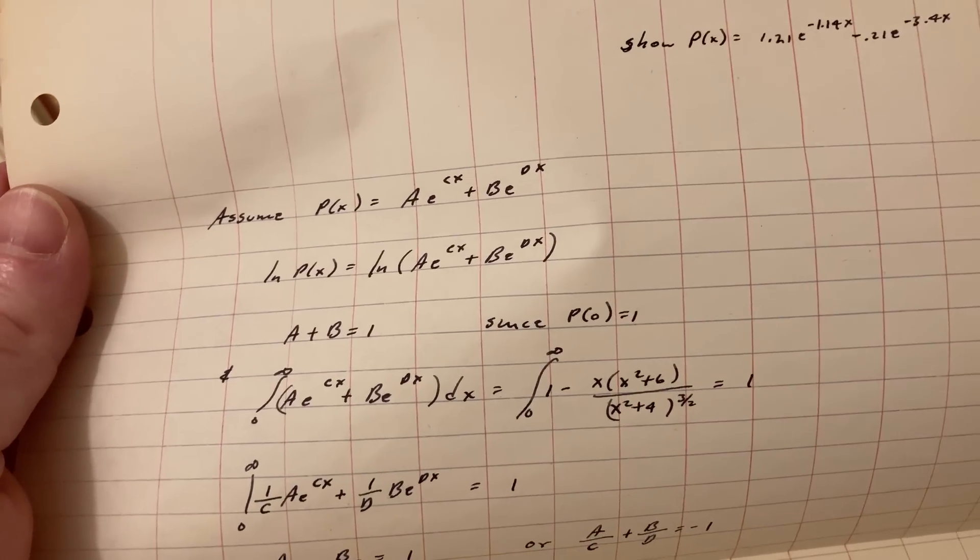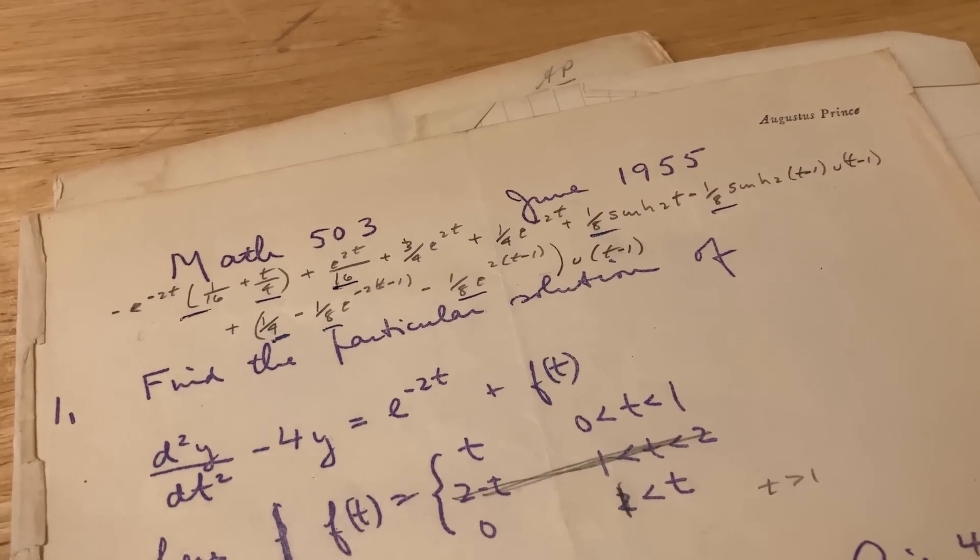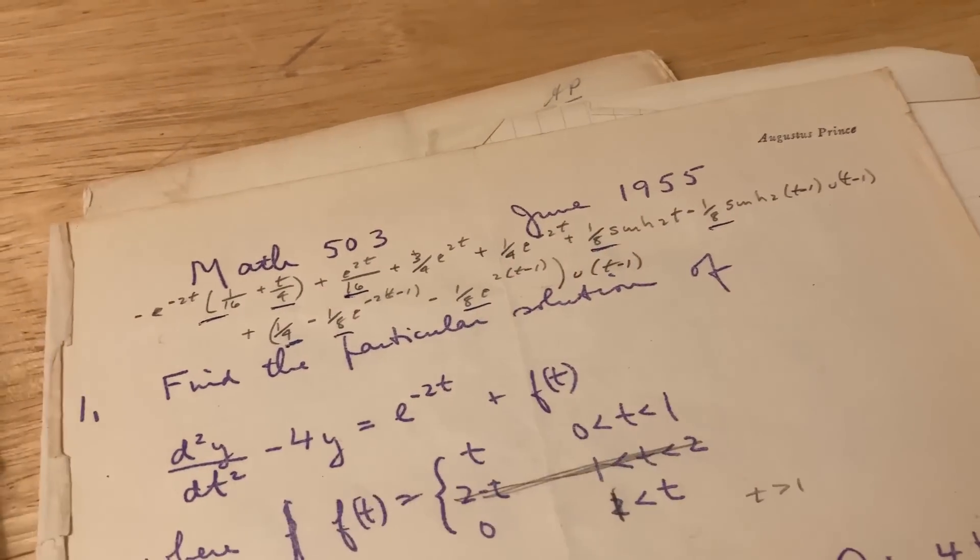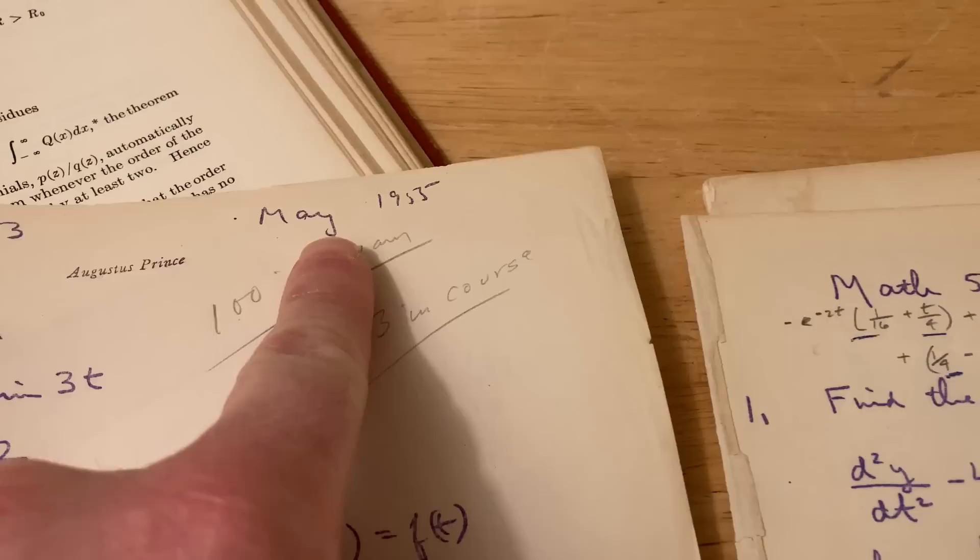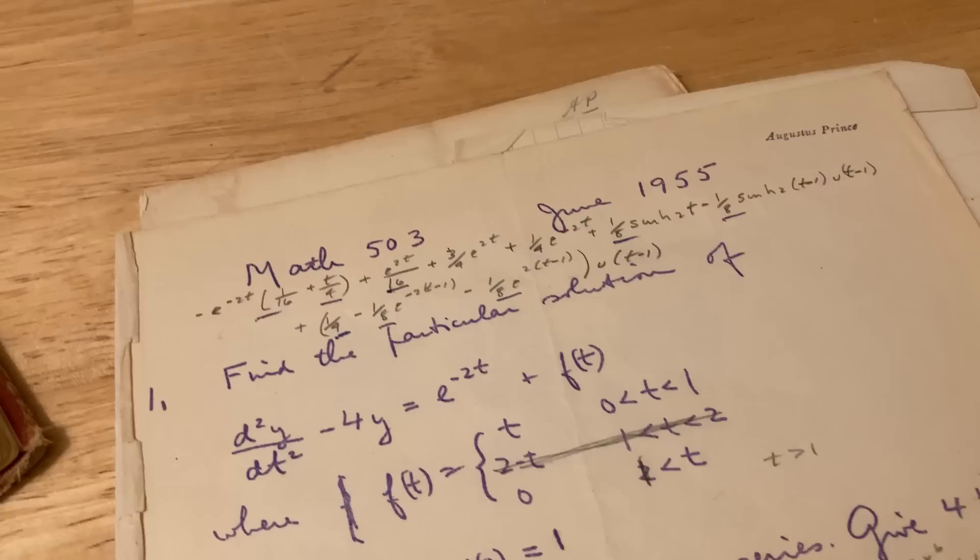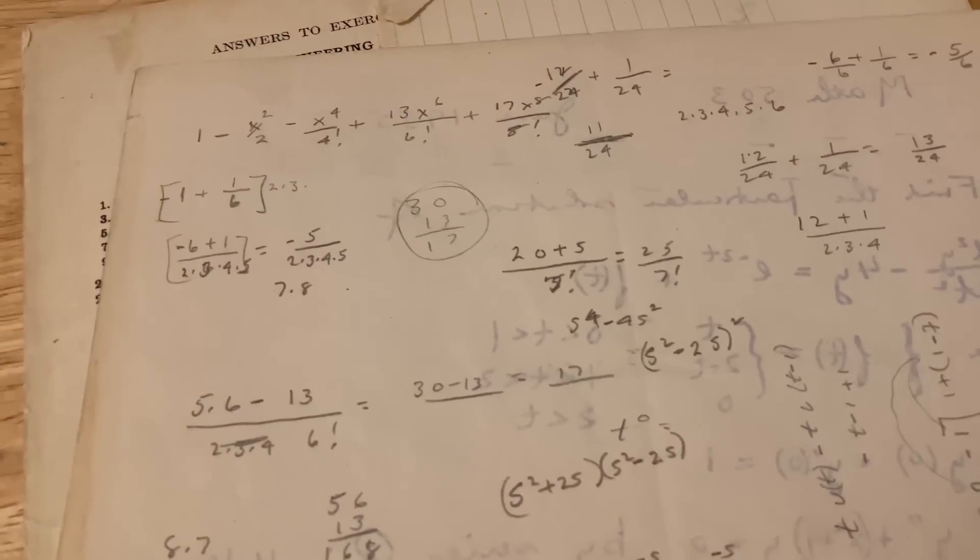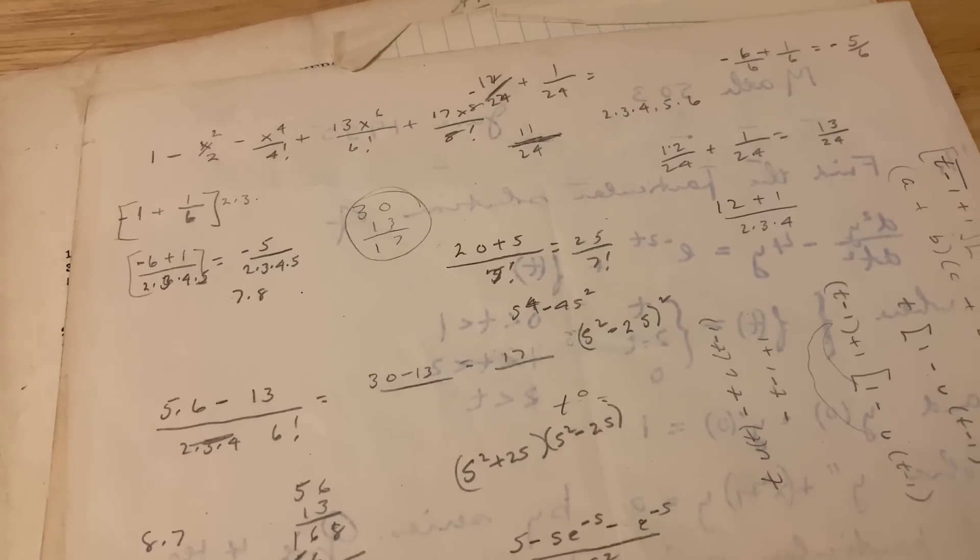Here's another apparent test paper from Math 503. This one was in June 1955 and the previous one was in May 1955. Really cool. There's some work on the back page here.